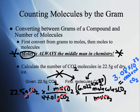Checking: sig figs — 3 in, 3 out. Units: molecules of CO2 — correct. Does the number make sense? We multiply 22.5 times 6.02 times 10 to the 23rd to get a bigger number, then divide by 44, bringing it back down. So 3.08 times 10 to the 23rd sounds reasonable. If we had gotten an exponent in the 40s or 50s, that would be a red flag; if we had gotten a very small number with no exponent, that would also be a red flag.